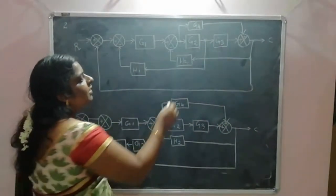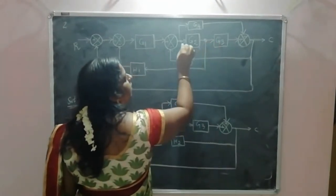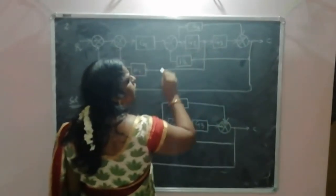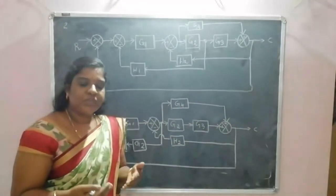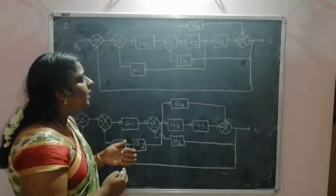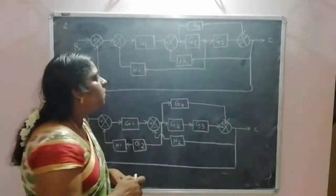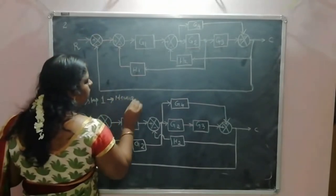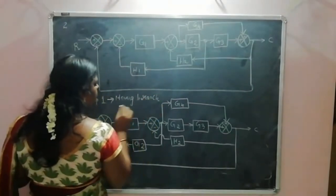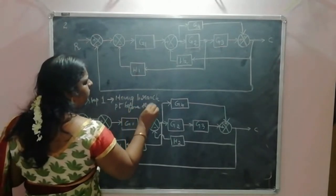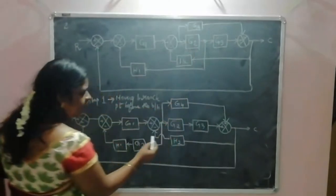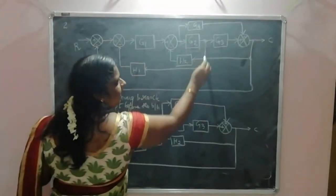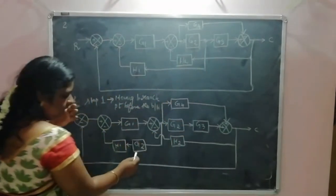So what we can do is first move this branch point before the block. The condition to move a branch point before a block means we have to multiply with the gain of that block. So in Step 1, moving the branch point before the block — if we are moving this branch point before G2, we are multiplying the branch line by the gain of G2.